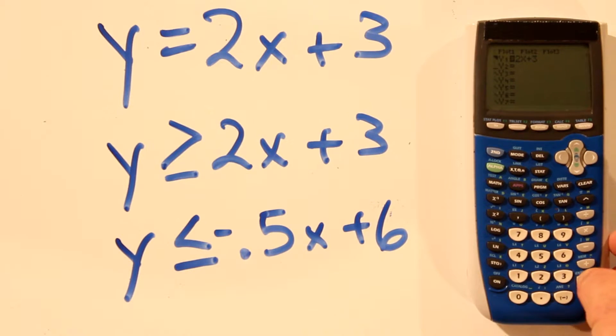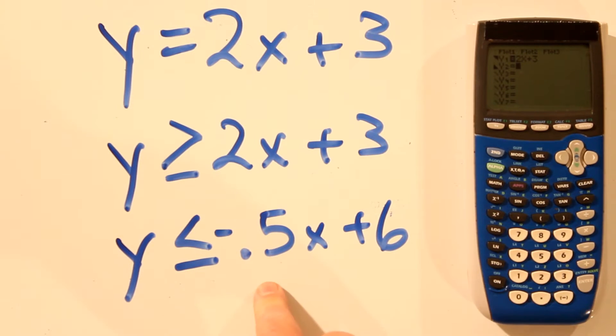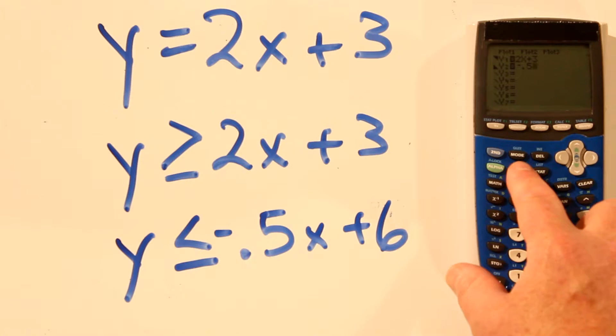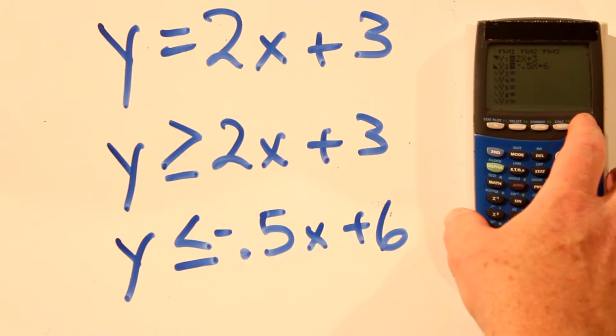We'll go down here to y2, enter, enter, enter. Now we're on the less than equal to. And we'll type in negative 0.5x. For the negative 0.5, use the smaller minus sign because it's a leading minus sign. Negative 0.5x variable sign plus 6. And let's graph these two lines.